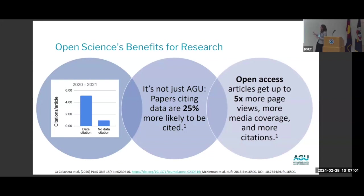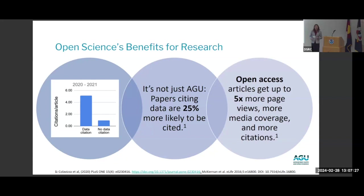A few more tangible benefits for those thinking about their Google Scholar: this analysis of AGU articles from 2020 to 2021 looked at articles that had a data citation embedded — authors who shared their data alongside their article — versus authors who didn't. Authors who shared their data are getting cited more; their work is being built on more. Papers that cite data are 25% more likely to be cited by others. Open access articles get up to five times more page views — not just from researchers but from the public and media outlets — and they get more citations as well.